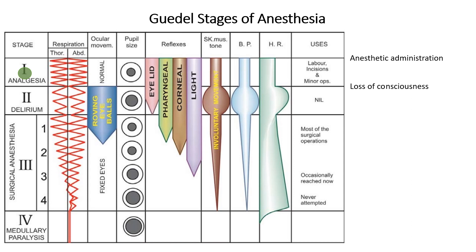Stage 2, or delirium, starts after the loss of consciousness and is characterized by irregular breathing, pupillary dilation, increased muscle activity, coughing, gagging, or vocalization. Reflexes may be exaggerated, and heart rate and blood pressure can increase. This stage is minimized in modern practice.